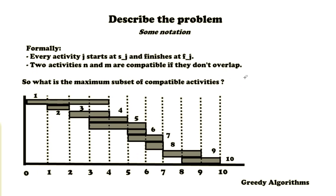Let's come up with some notation for this problem. In a formal way, every activity j starts at a time sj and finishes at fj. Two activities n and m are compatible if they don't overlap. That means the starting time of an activity shouldn't be smaller than the finishing time of the previous activity. Then they would overlap.